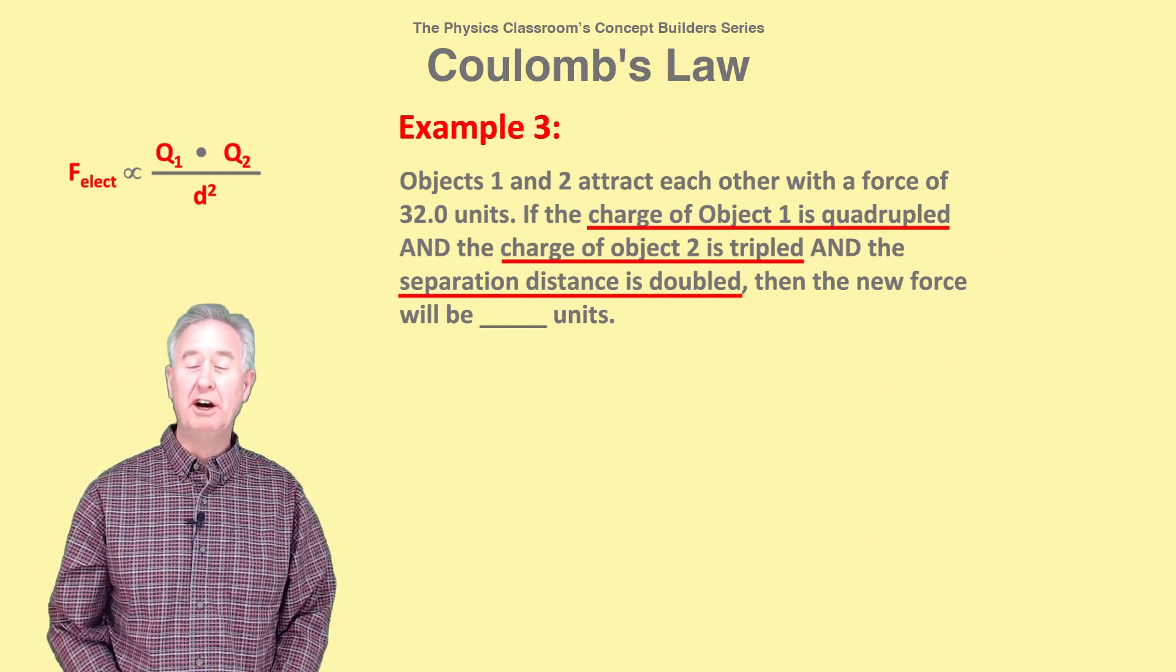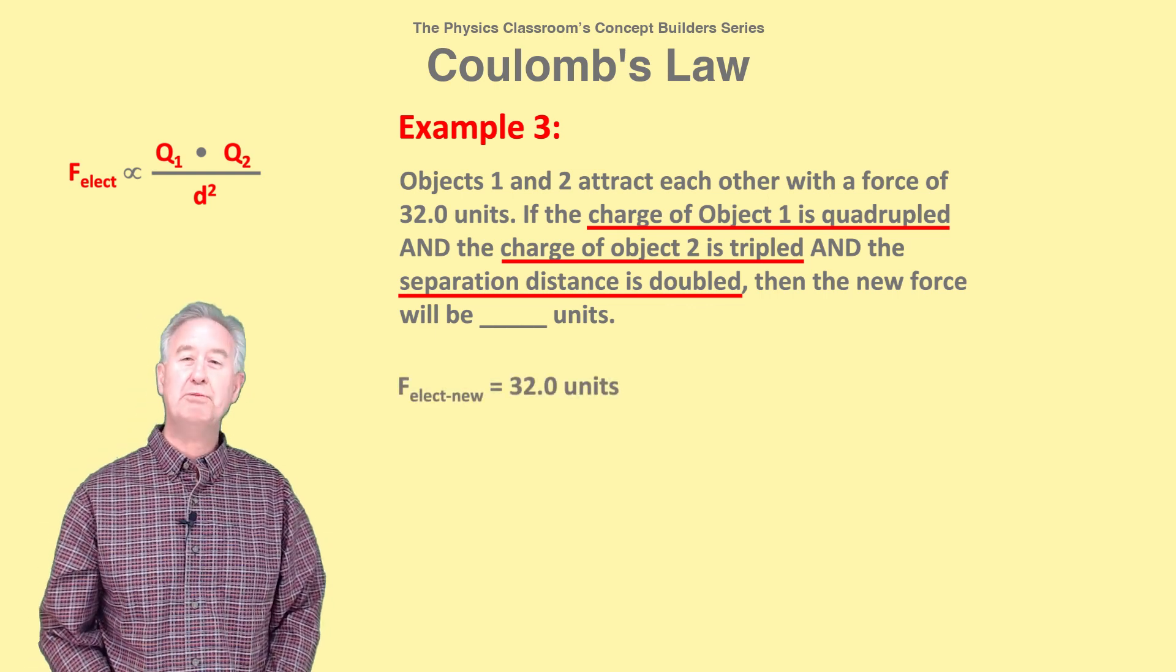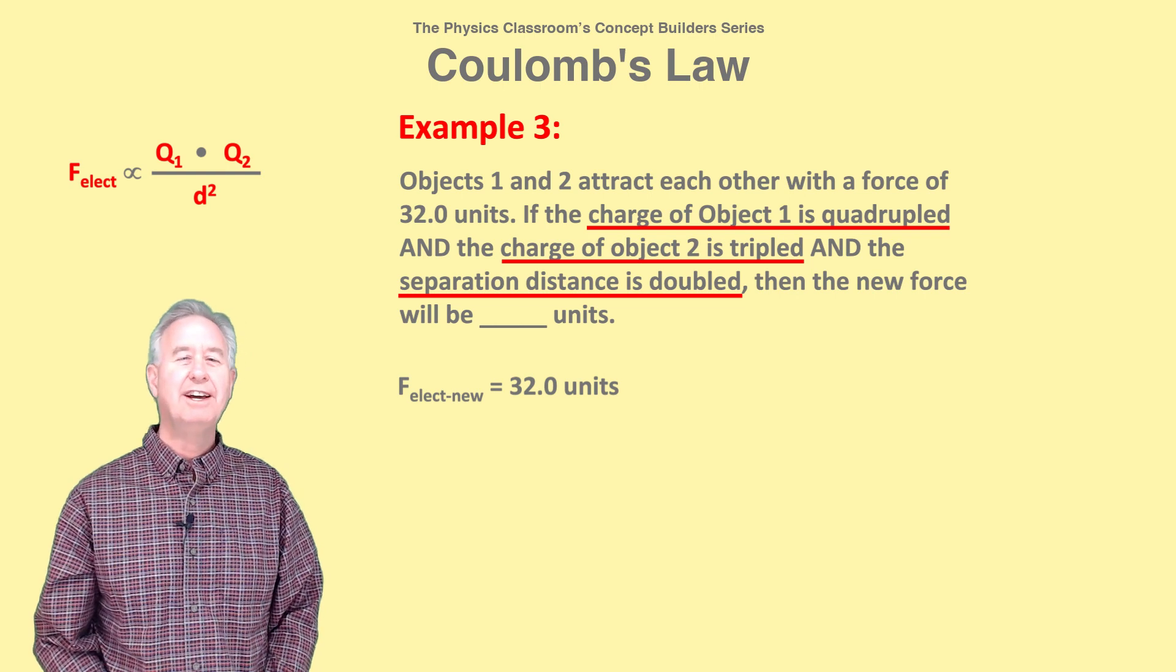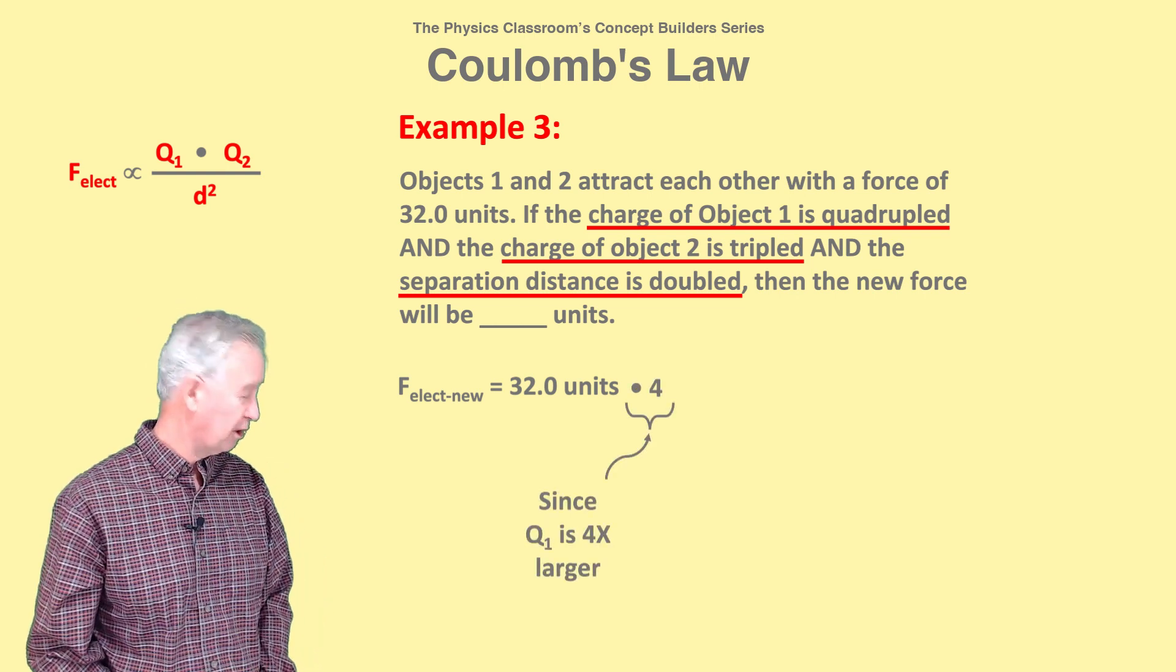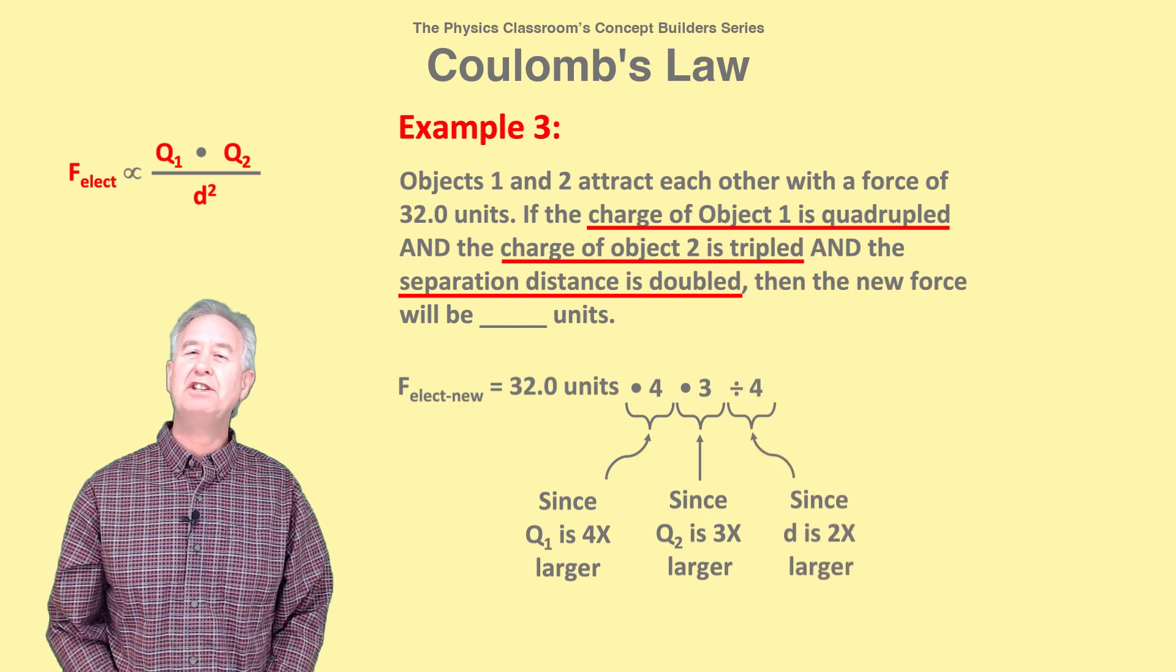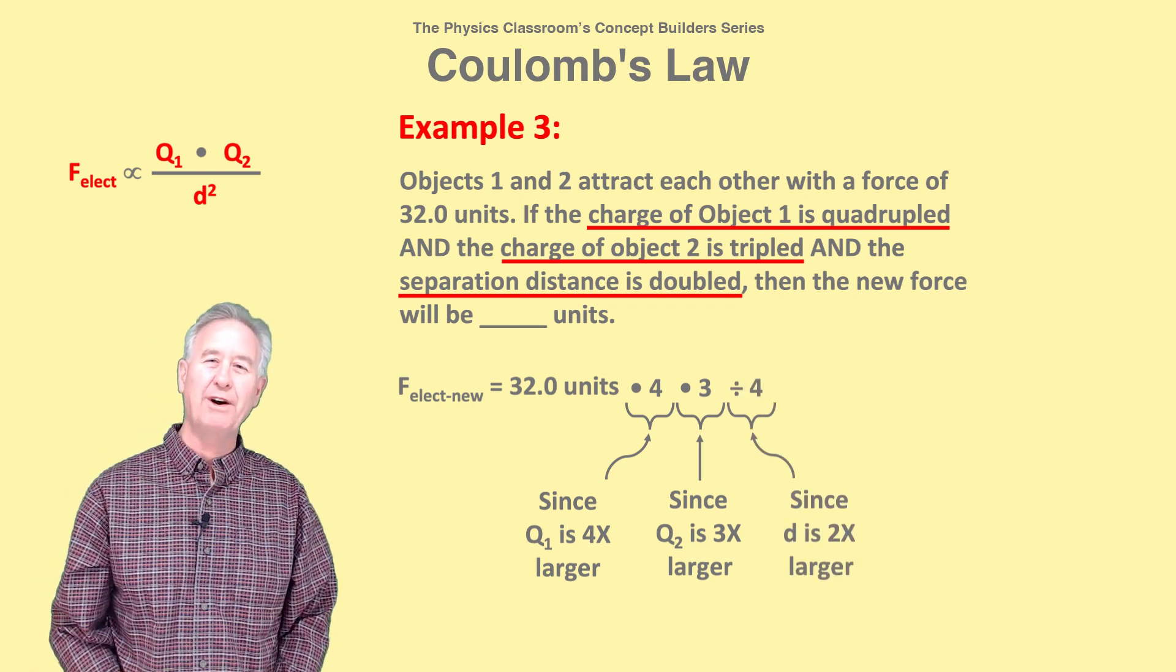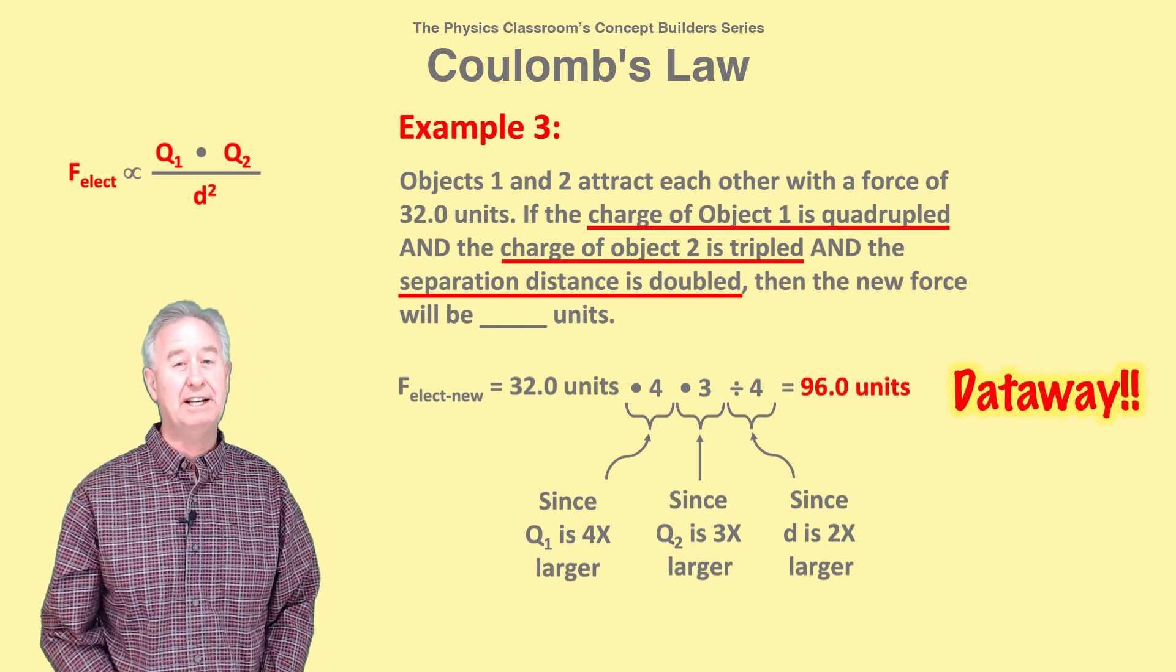In example 3, Q1, Q2, and d are all changed. So the original force of 32 units must be changed three times, once for each variable change. Since the Q1 is quadrupled, the force must be multiplied by 4. And since Q2 is tripled, the force must be multiplied by 3. And since the d is doubled, the force must be divided by 4. Use your calculator to determine the new force to be 96 units.